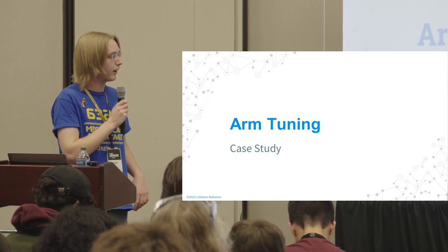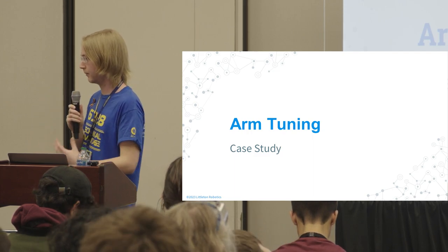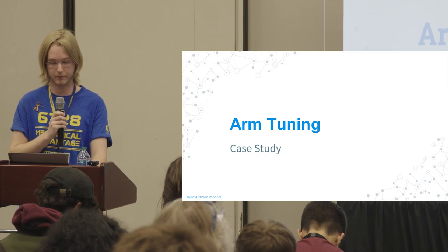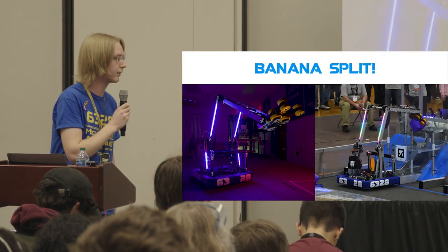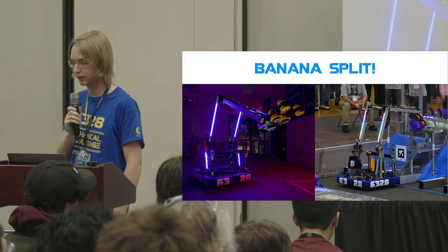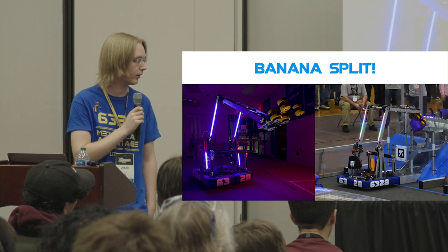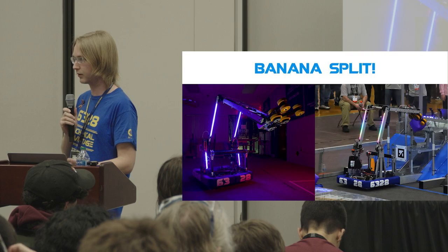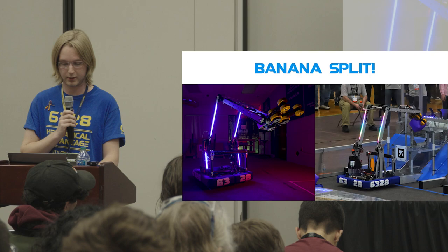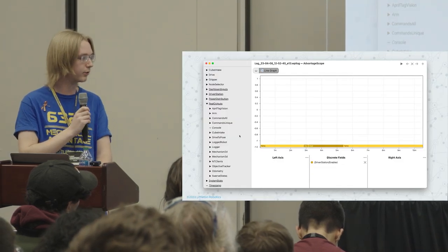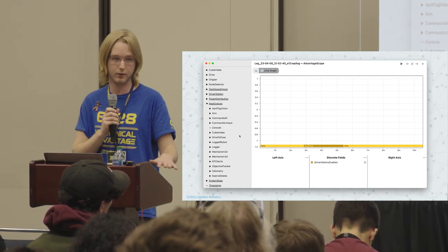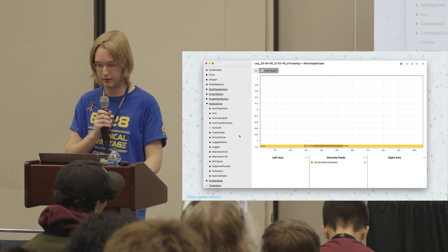With the background out of the way, let's look at some case studies. The first is tuning an arm. 6328's 2023 robot, BananaSplit, has a triple-jointed arm — shoulder, elbow, and wrist joints — plus a cube intake on the front. All arm joints are controlled via a feedforward model and a PID controller, which needs to be tuned. Everything we're about to look at is possible with only level two logging.